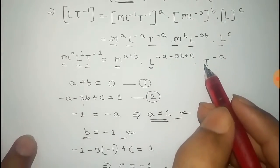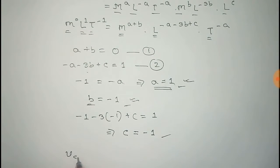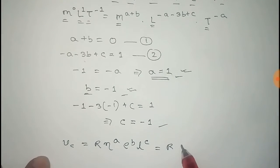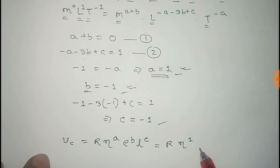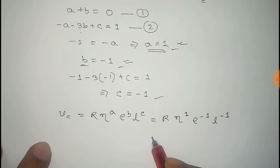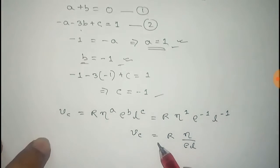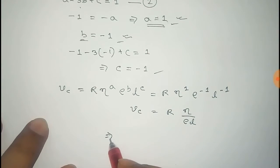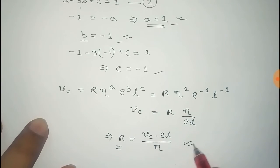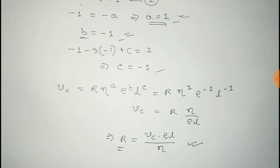Now putting these values into the equation, we get Vc equals R times eta to the power 1, times rho to the power minus 1, times L to the power minus 1. That simplifies to Vc equals R times eta divided by rho L. From this, R equals Vc times rho times L divided by eta. Thus we get the expression of Reynolds number from dimensional analysis.